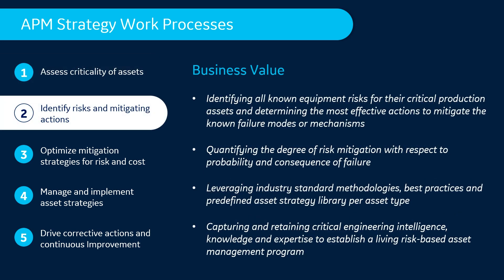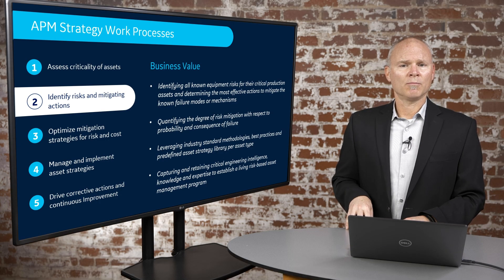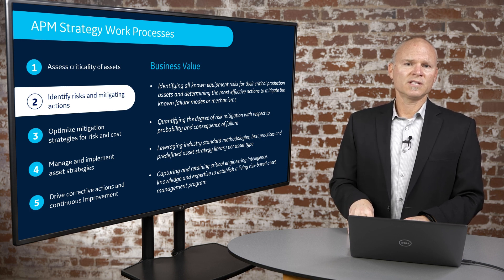Once I know the criticality of assets, the next step is identifying the specific failure modes or risks associated with those assets, and the specific mitigating actions I could perform to address those risks. Out of those potential mitigating actions, which ones am I going to execute based on how critical the asset is and how much risk it poses to me and my organization?